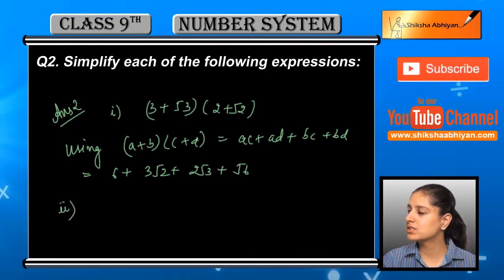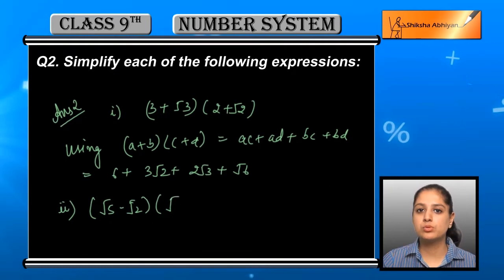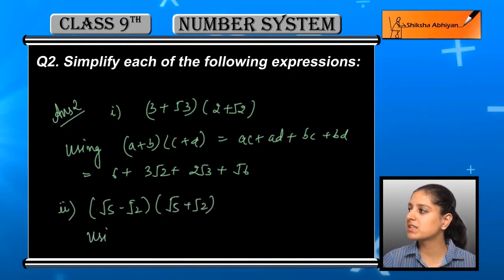Next: (√5 - √2) and (√5 + √2). You can see the brackets are exactly the same except for the sign - one has minus and one has plus.